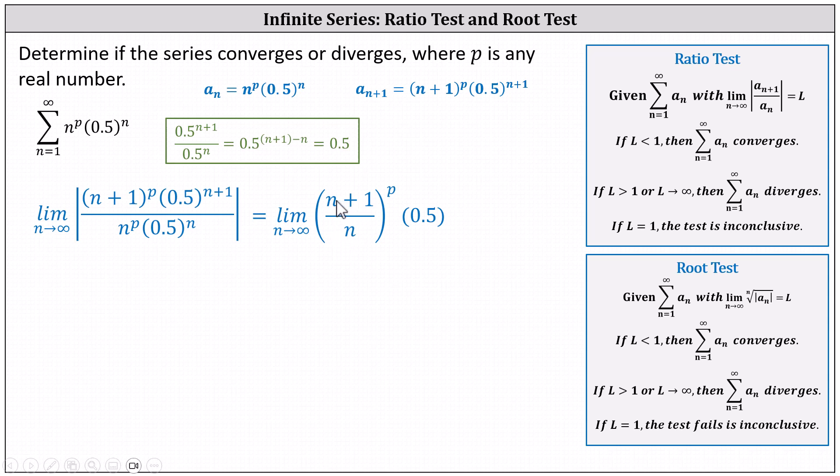And now let's simplify the quantity n plus 1 divided by n. Let's first write it as n divided by n plus 1 divided by n, which equals 1 plus 1 divided by n.